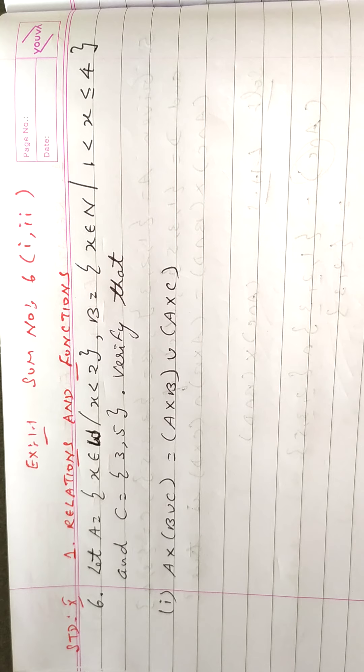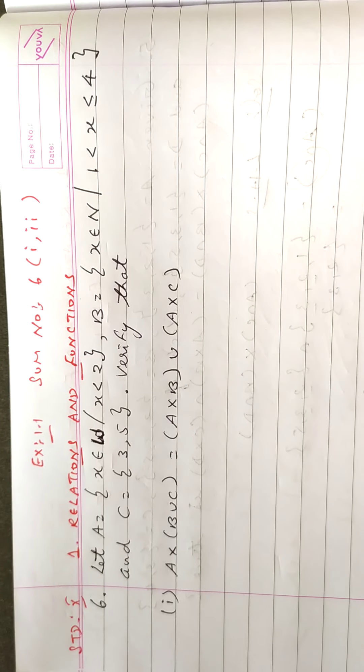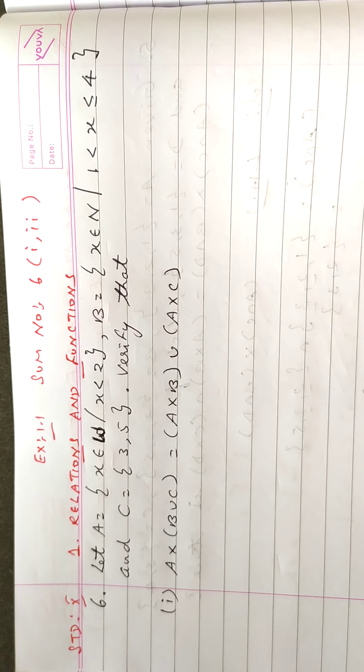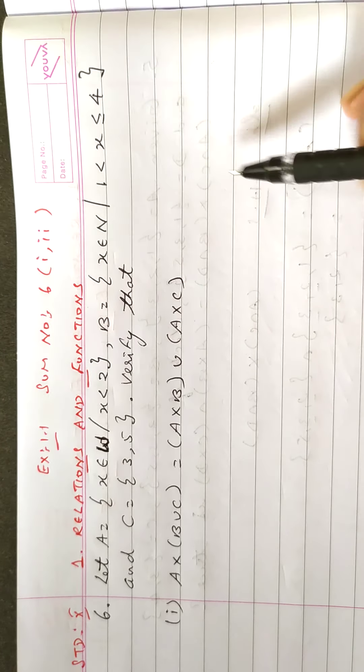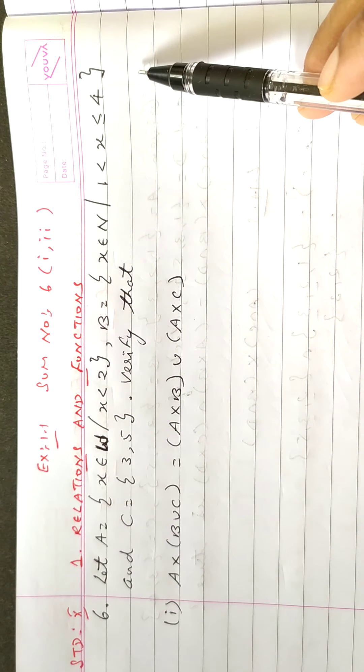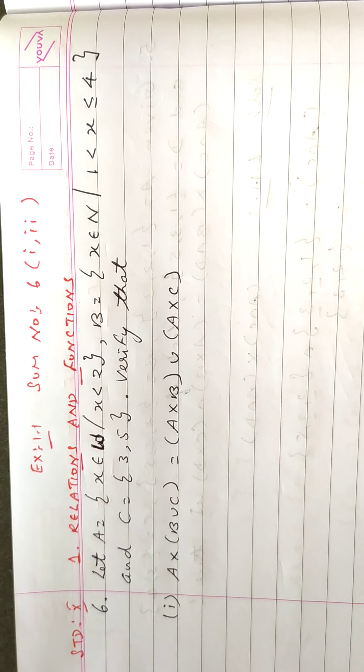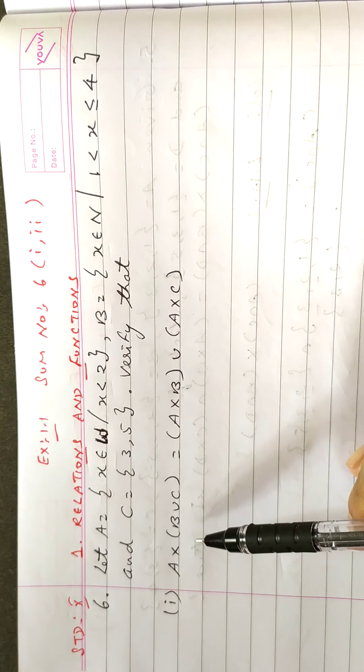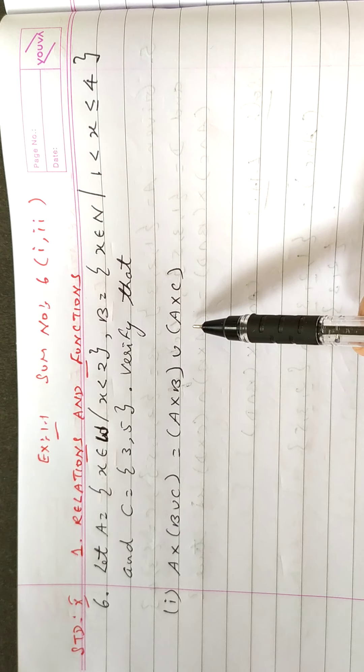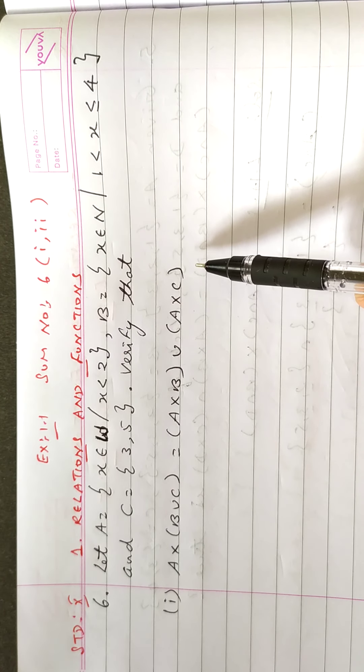1st Roman and 2nd Roman Pagma, Sum No. 6. Let A is equal to x belongs to whole number x less than 2, set B is equal to x belongs to natural number x greater than 1 less than or equal to 4, and set C is equal to 3,5. Verify that A cross B union C is equal to A cross B union A cross C.